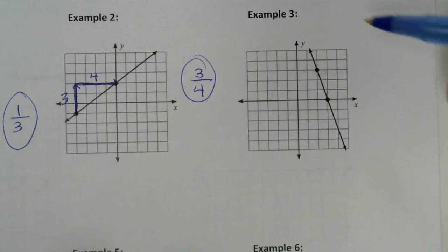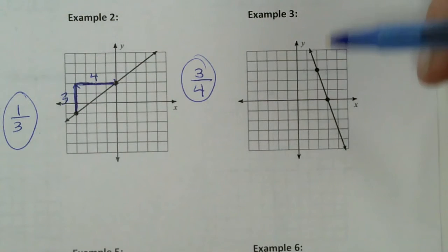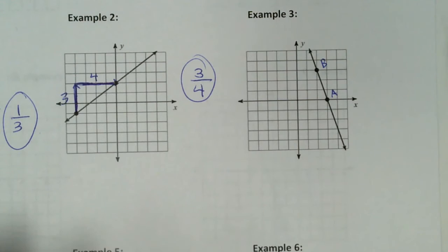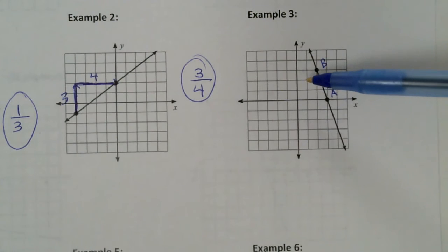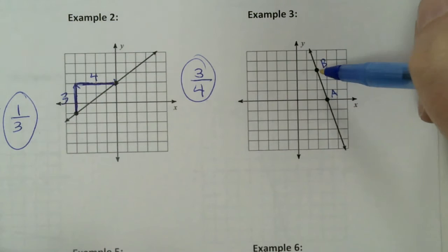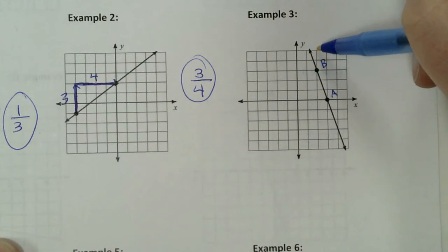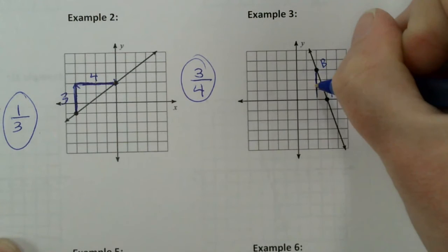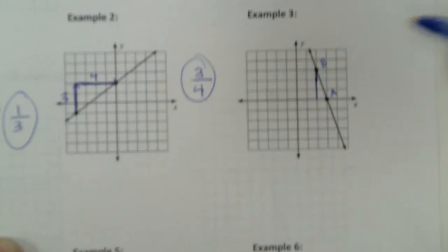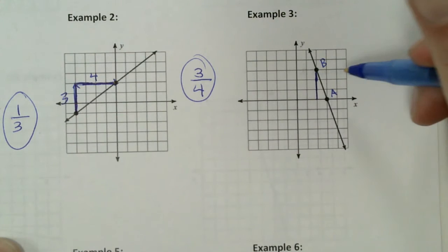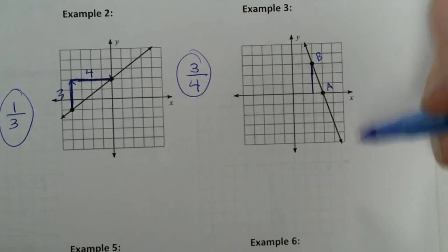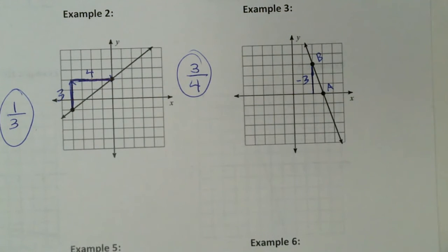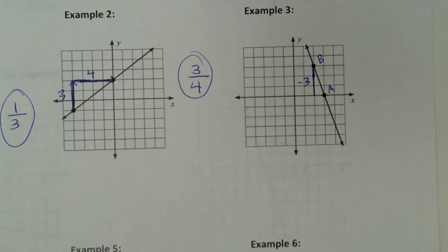First step is pick two points on the line — they gave us two points. I'm going to give these letters: let's say this is point A and this is point B. Can you tell which one is more to the left? Point B is, right? So B is my starting point. Now this time when I rise, I'm not going to go up because that's not taking me to point A — I'm going down. How far do I go down? Three. Now since we went down, we're going to use negative three. When you rise up, you are positive. When you rise down, it's negative.